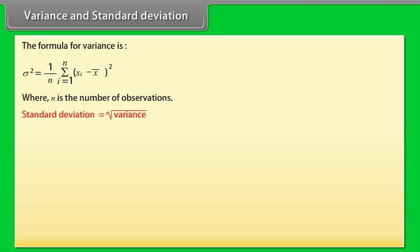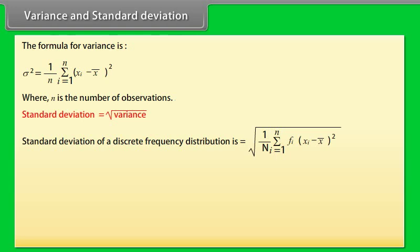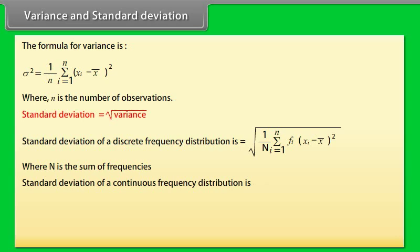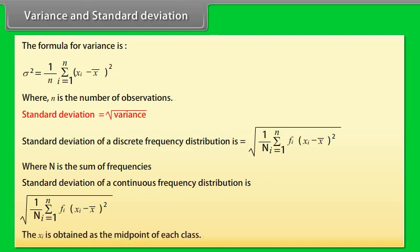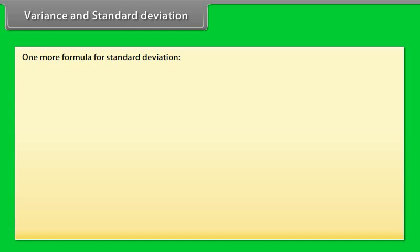Standard deviation of a discrete frequency distribution is: square root of [summation from i=1 to N of Fᵢ(Xᵢ − X̄)²] divided by N, where N is the sum of frequencies. For a continuous frequency distribution, Xᵢ is obtained as the midpoint of each class, and the same formula applies.